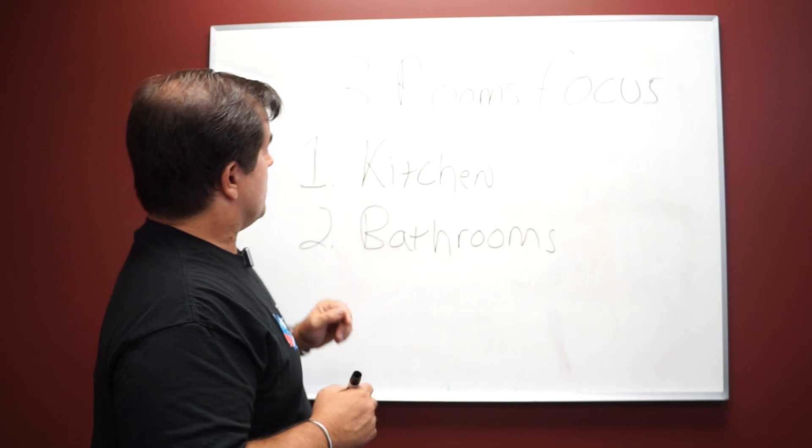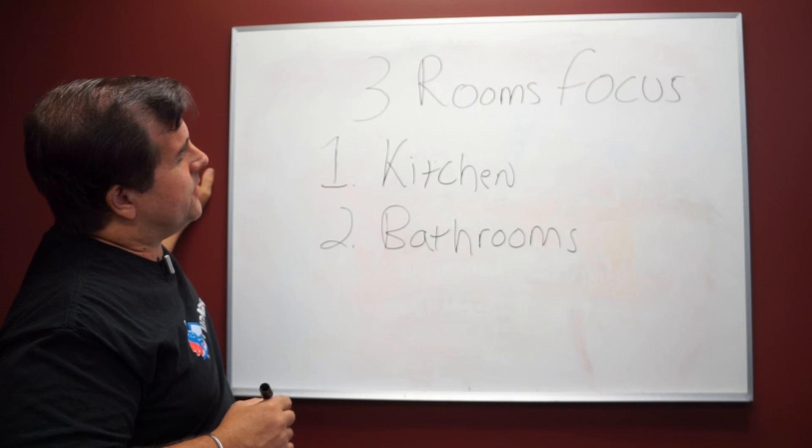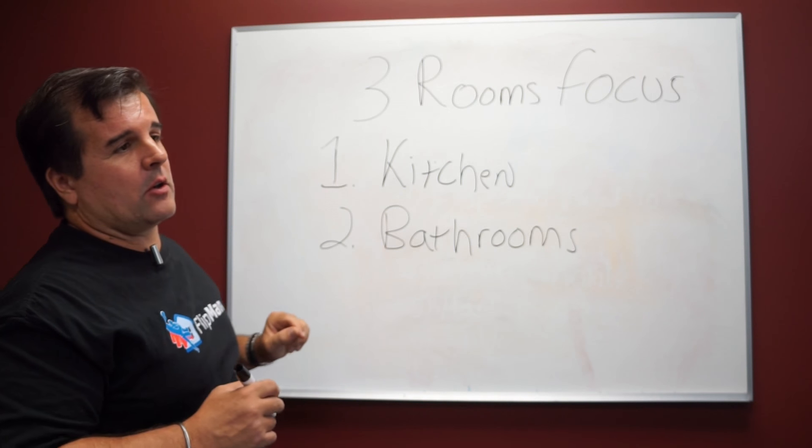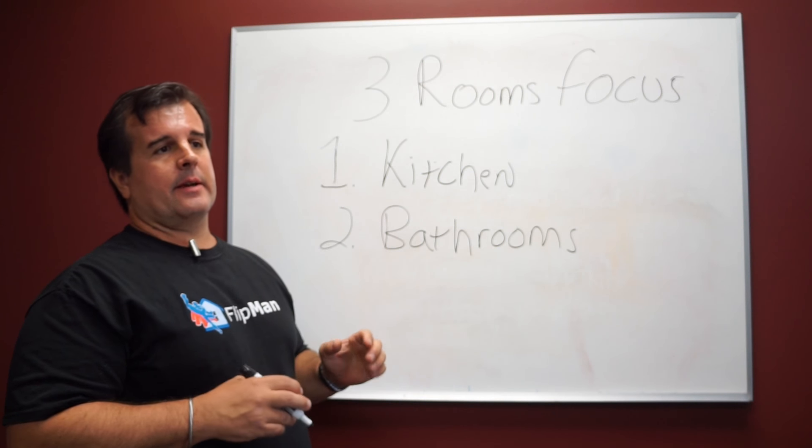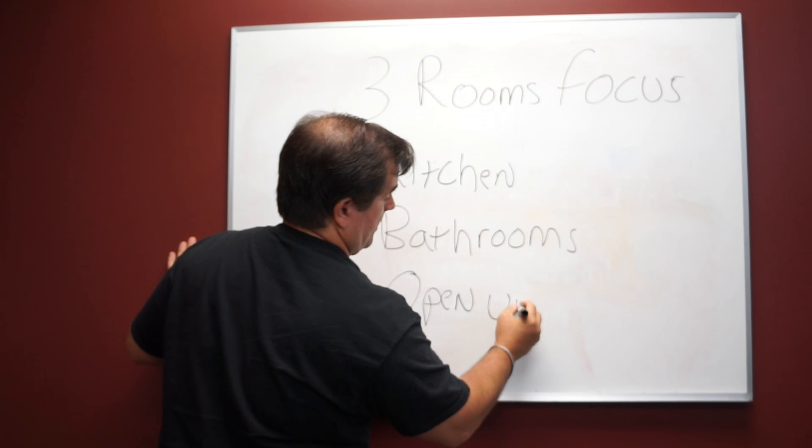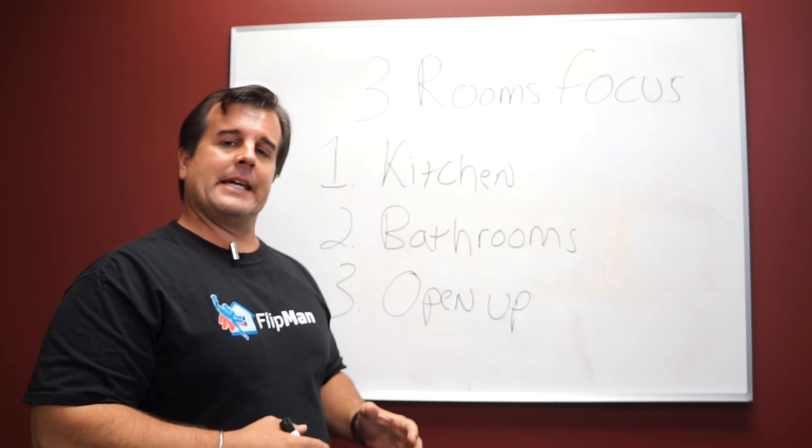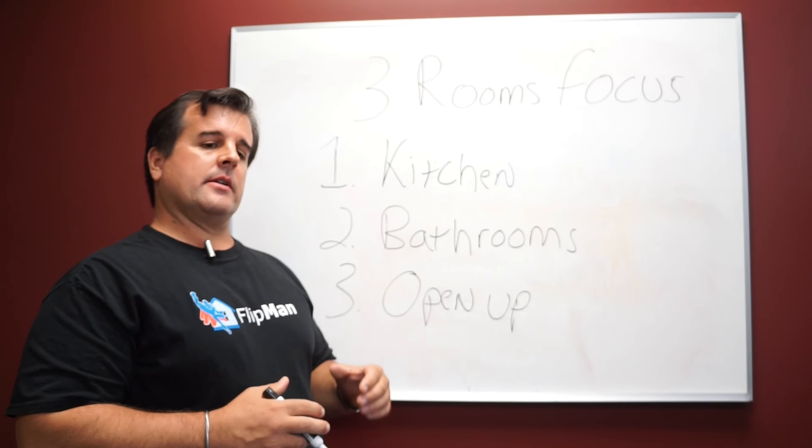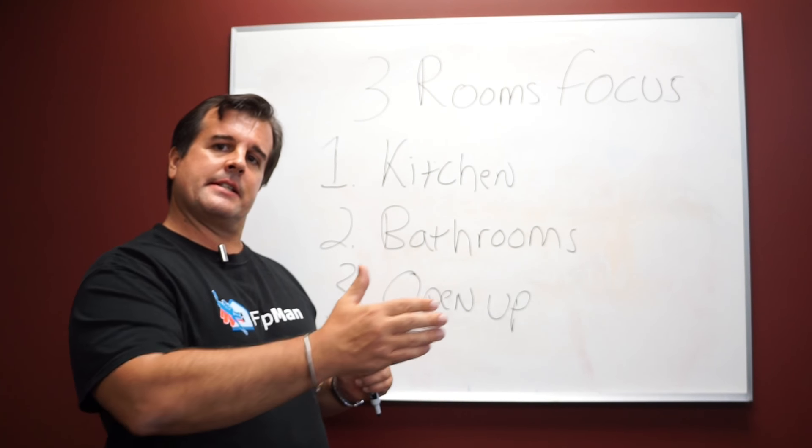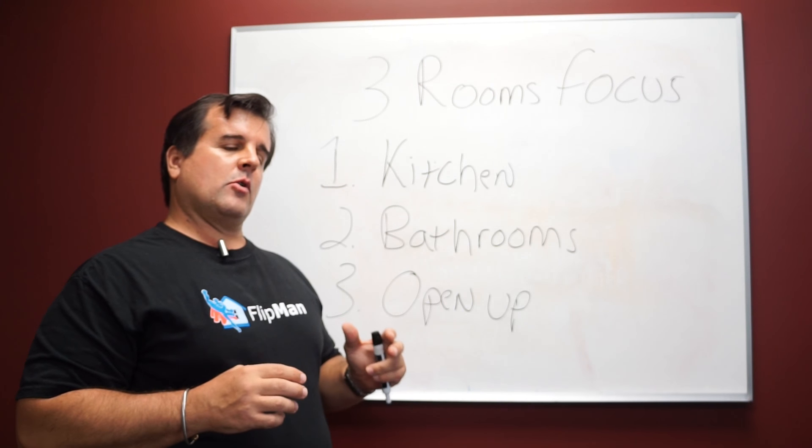Quartz again, throughout the house on the countertops, and then new kitchens in the bathroom. And the paint is a very important item. I like to use a paint called accessible beige. It kind of blends in with the grays. And if they do have some darker furniture, it goes very well with that. So it's between the grays and the tans with the paint color, it's called accessible beige.